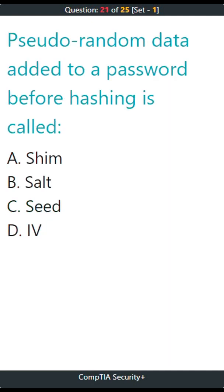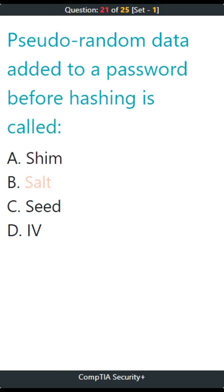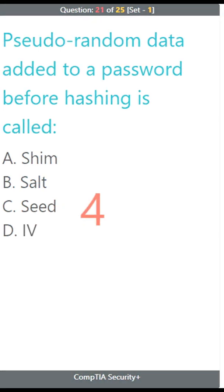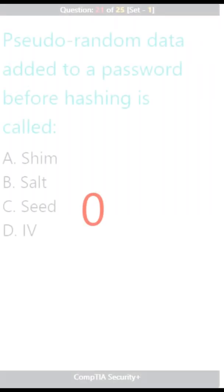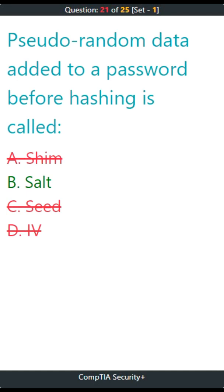Question 21. Pseudo-random data added to a password before hashing is called: A. Shim, B. Salt, C. Seed, D. IV. The correct answer is B. Salt.